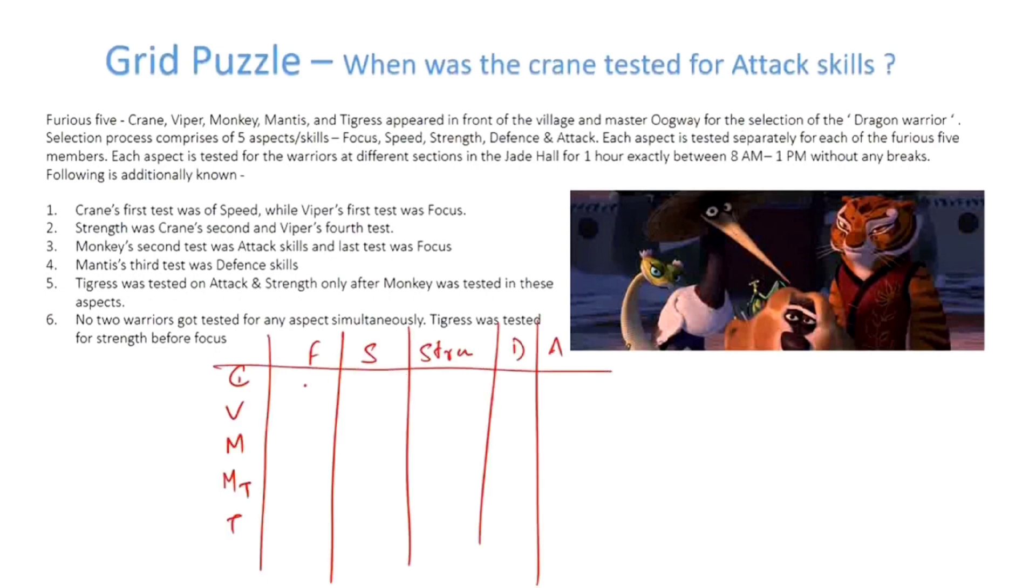How do we structure this? We've drawn a very simple grid to represent it. Crane's first test was of Speed - Crane's first test was Focus. Crane's second was Strength, and Viper's fourth was Strength.